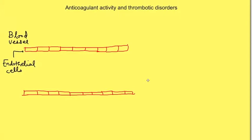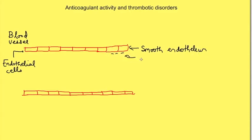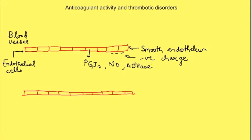Pro-coagulants — the factors causing activation of platelets and clotting factors — have already been dealt with. But what are the anticoagulant mechanisms? One is the presence of smooth endothelium itself. Then there is negative charge on the endothelium which repels platelets. The endothelium also releases certain substances like prostacyclin, nitric oxide, and adipases, which all keep platelet activation in check, preventing platelet plug formation.